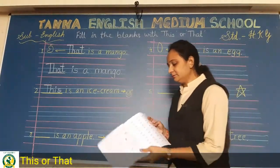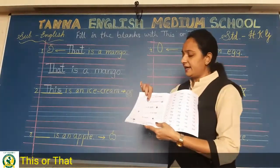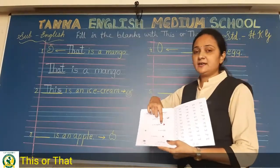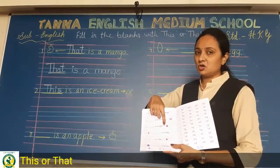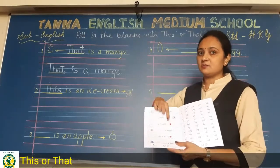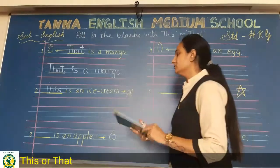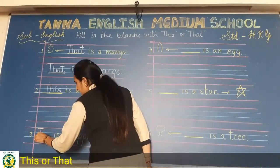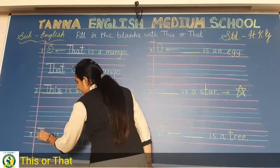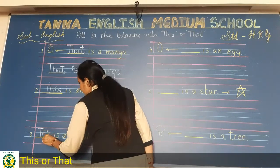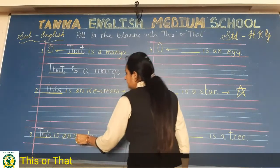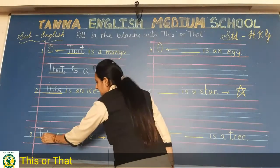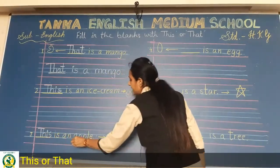Now the third one: dash is an apple. The apple also has a short arrow, which means it is near. So what will you write here? 'This.' The full sentence is: 'This is an apple.' Write the complete sentence on the second line provided.